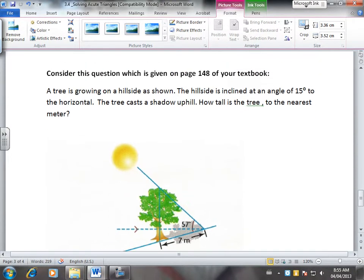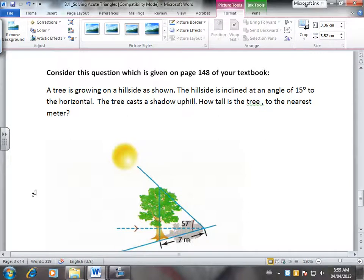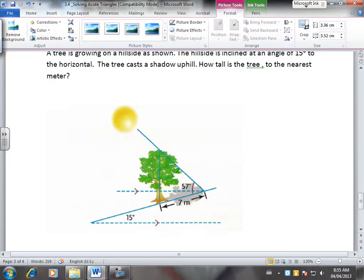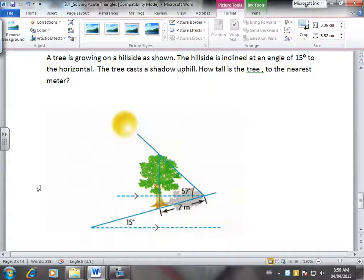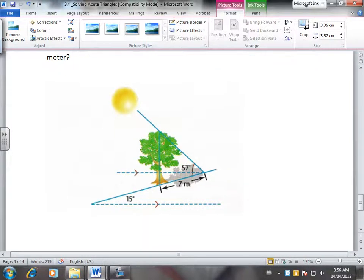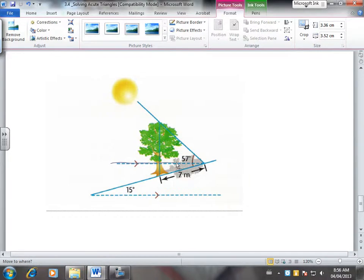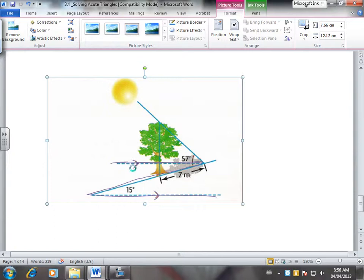Now let's look at our last question here. Consider this question, which is given on page 148 of your textbook, so you can go check it out in your textbook too. A tree is growing on a hillside as shown. The hillside is inclined at an angle of 15 degrees to the horizontal. Now, the tree casts a shadow uphill. How tall is the tree to the nearest meter? So here's our horizontal that we drew in here. So 15 degrees.